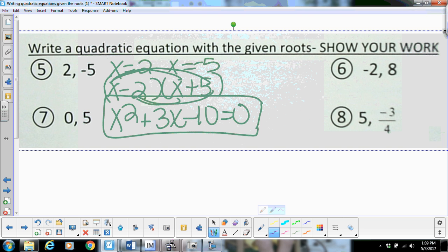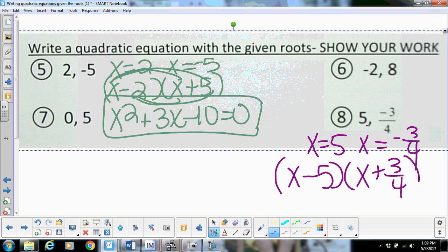Alright, the other one I'm going to work on is number eight. Okay, I'm going to start here and that's going to give me x equals five and x equals negative three-fourths, which is going to give me x minus five and x plus three-fourths. You do have to bottoms up here. So that's going to give me four x plus three.